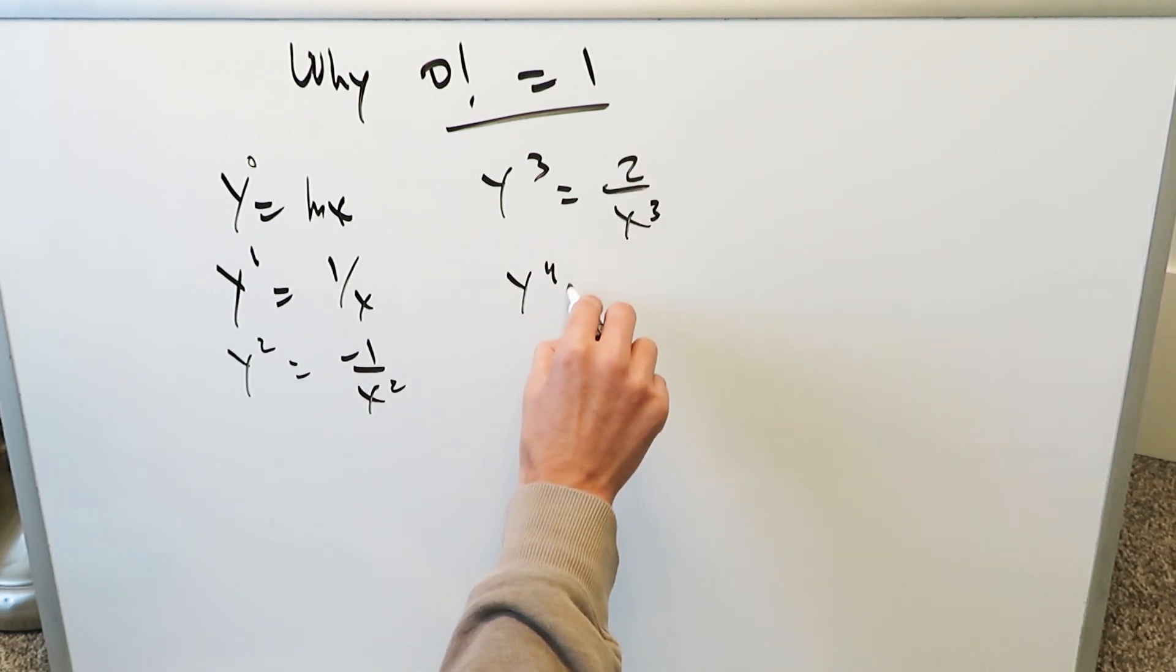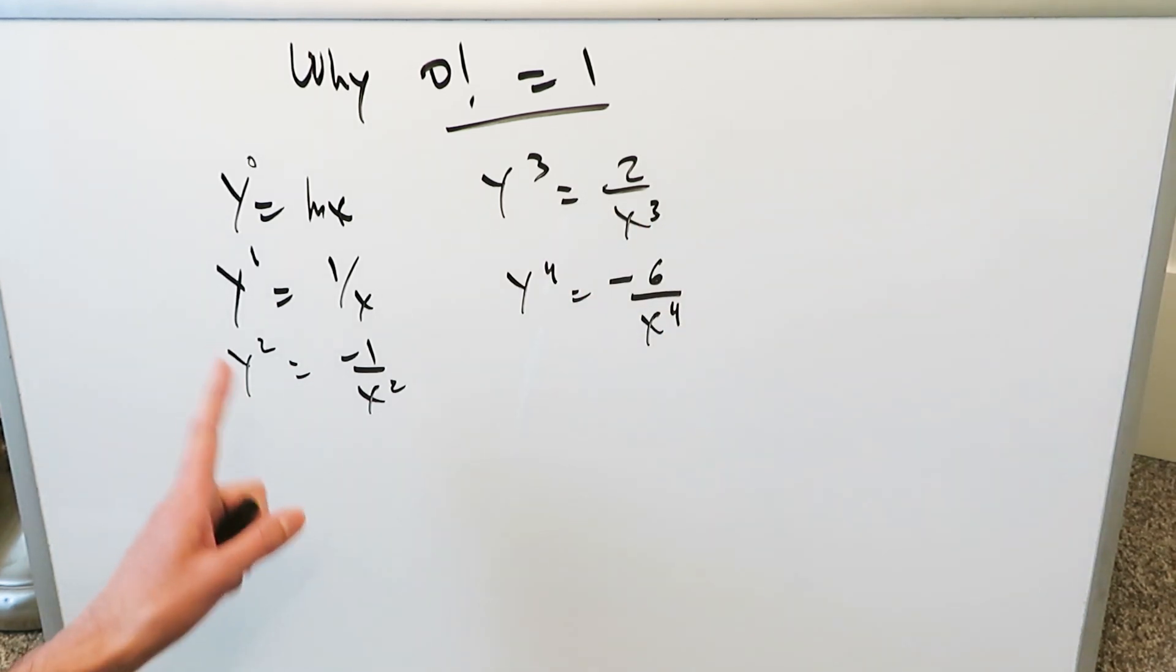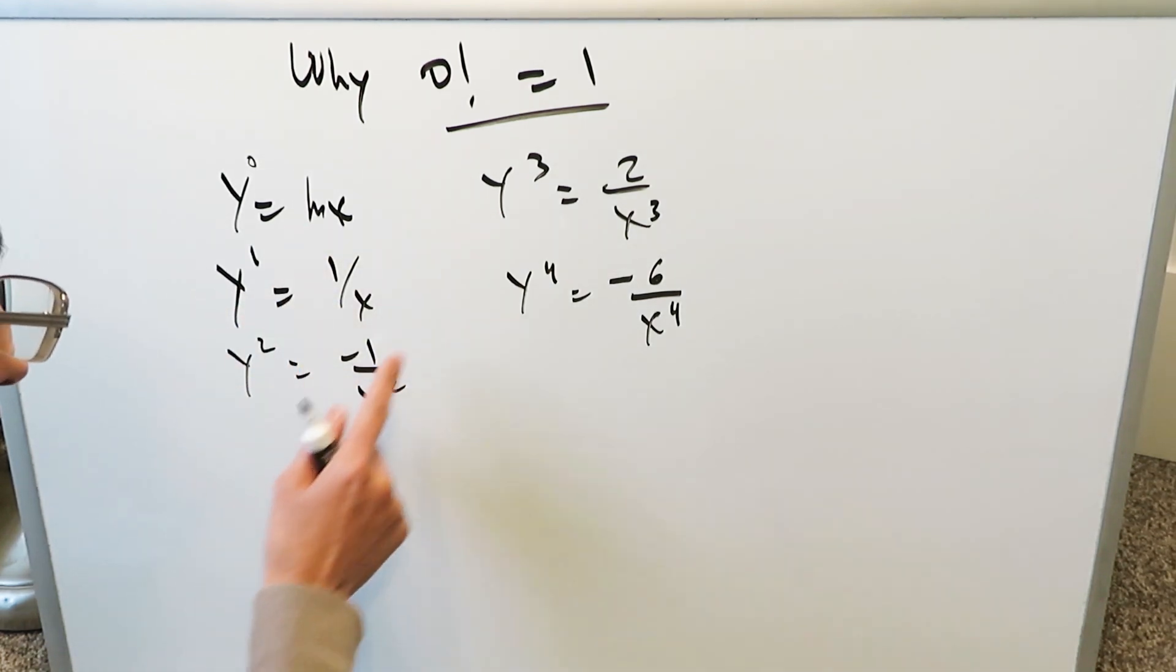The 4th order derivative, you take this onward, you get minus 6 over x to the 4. But when you look at the pattern over here, look at the pattern of how things play out. There's a specific rule which develops.